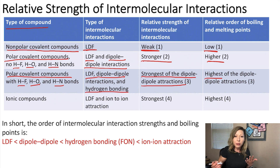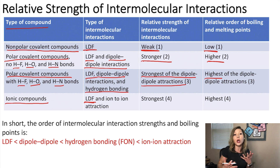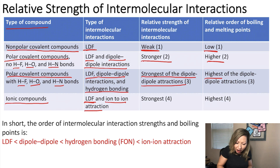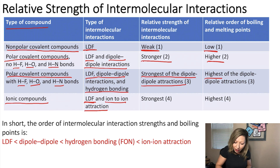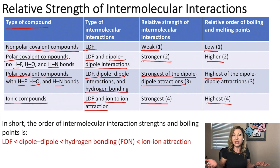A fourth type of compound we need to look at is ionic compounds. In those cases we still have London dispersion forces, but because we have different ions — like sodium chloride, which contains Na⁺ and Cl⁻ ions — we also have ion-to-ion attractions, giving us the strongest intermolecular interactions and the highest melting and boiling points.